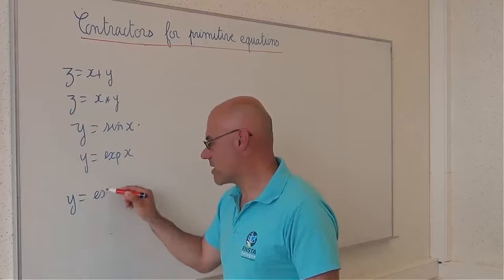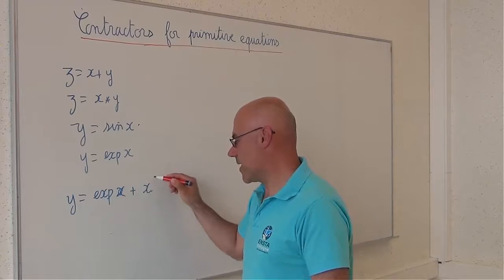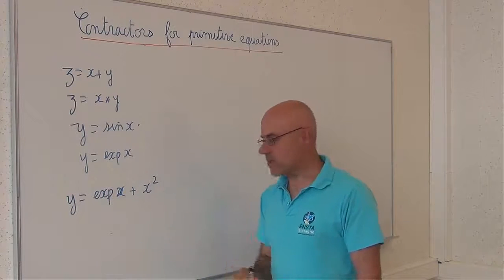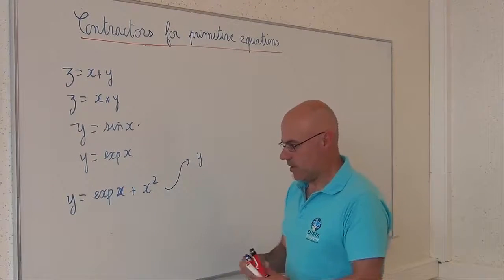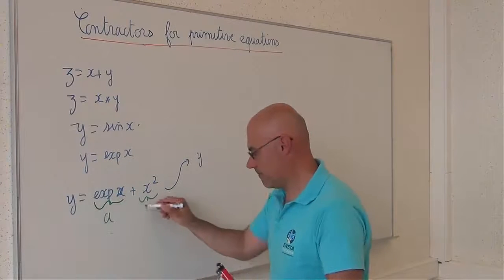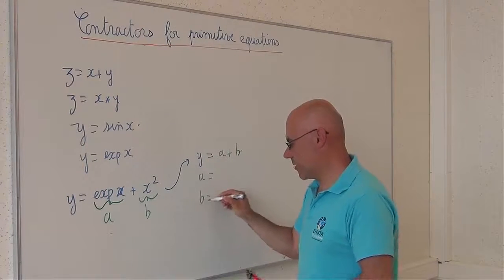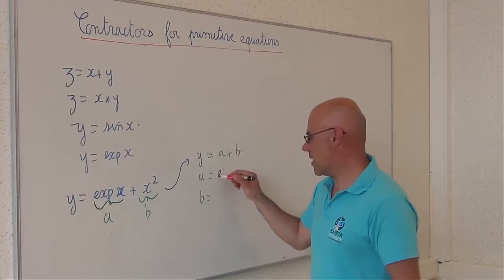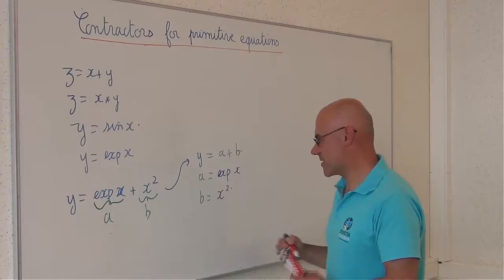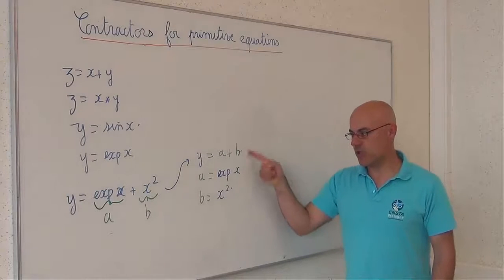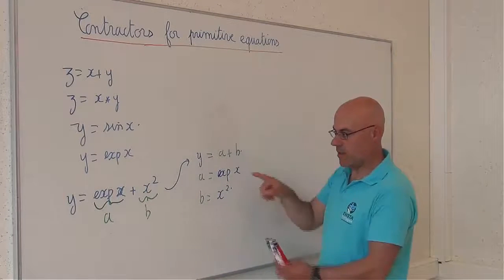For instance, if I take this one, exponential of x plus square x, this equation can be decomposed as follows: a equal to a plus b, with a equal to exponential of x, and b equal to the square of x. These three equations are primitive equations, but this one is not a primitive equation because it can be decomposed.